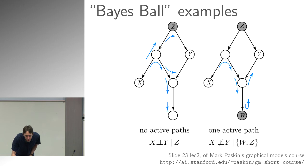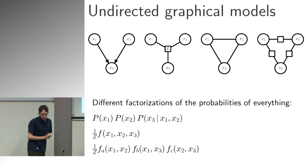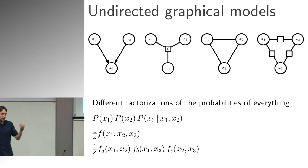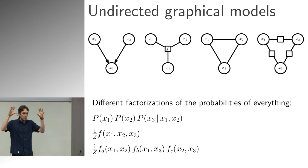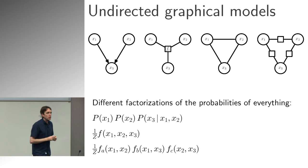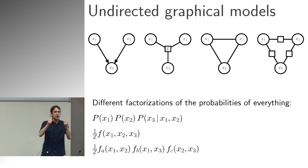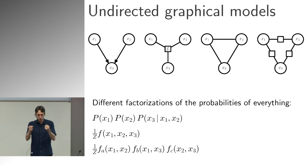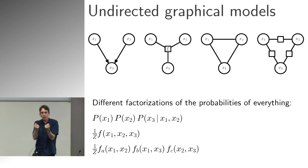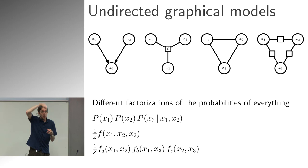Undirected graphical models don't have arrowheads — no parent or child nodes. Sometimes that's more natural, like two adjacent pixels in an image where it's not natural to say one caused the other. You might just want a model that says these pixels tend to have the same value — an undirected mutual attraction. One way is to have a parent node setting both pixels, but sometimes it's easier to have a model directly within the layer of variables you care about.